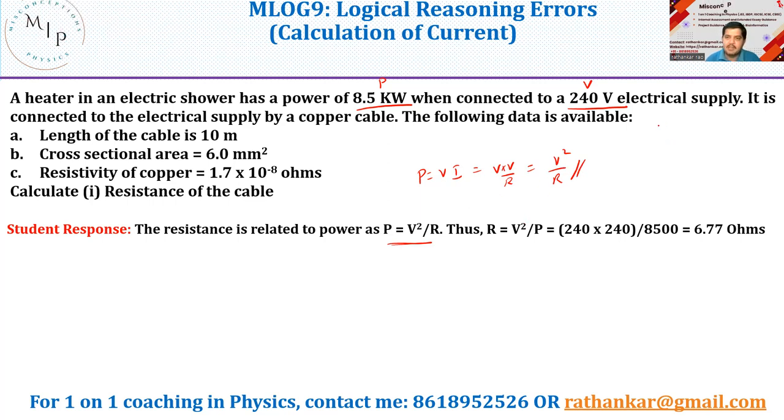From 10th standard we have been studying this. The formula for power, the three formulae: one is V × I, the other one is I² × R, the other one is V² divided by R. Any one of them you can use it. Now of this, he has chosen this. Why? Because V is known, P is known, and you have to substitute all the values to get the value for R. This R can be written as V²/P. Substitute the value, so you get the answer 6.77 ohms.